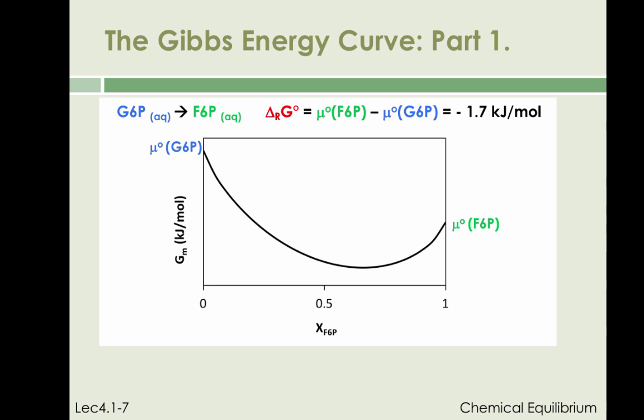Assume the isomerization reaction has taken place for a while and already resulted in the mixture exhibiting a mole fraction of fructose 6-phosphate shown by the black vertical dashed line. At this stage of the reaction, the Gibbs energy of the mixture is given by the black dot. We can draw a straight line, shown in red, between the chemical potentials of the pure reactant and pure product. This defines the location of the red dot.